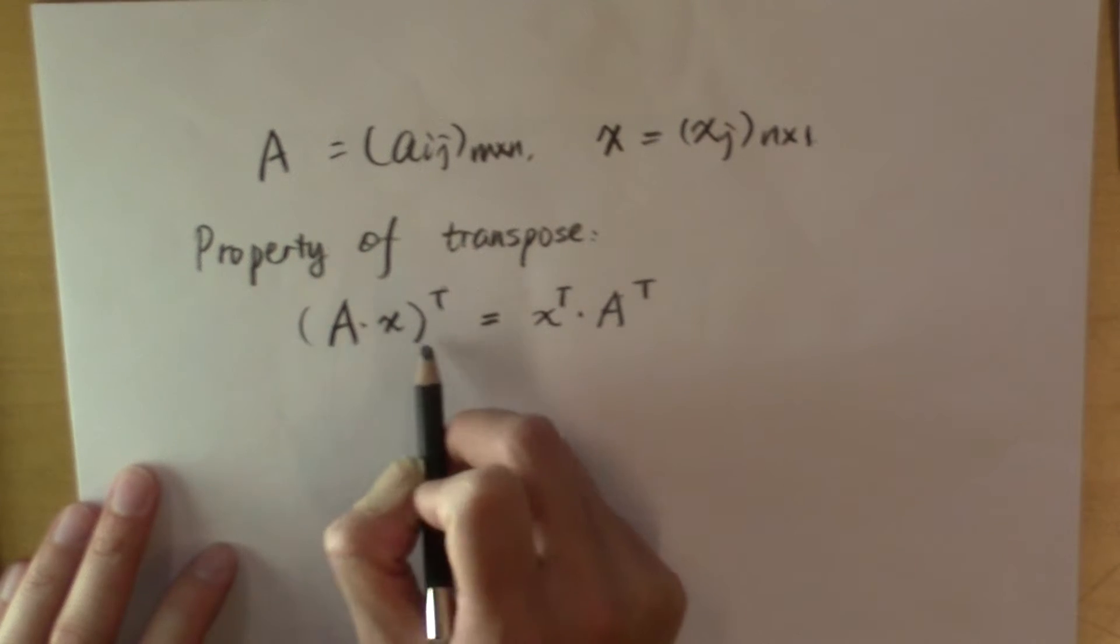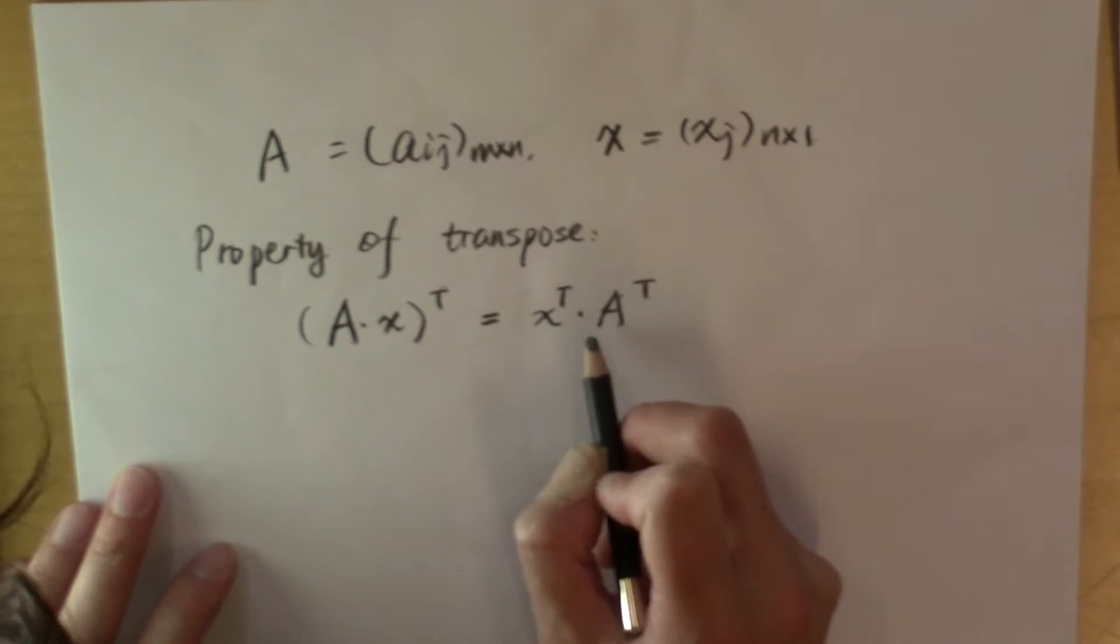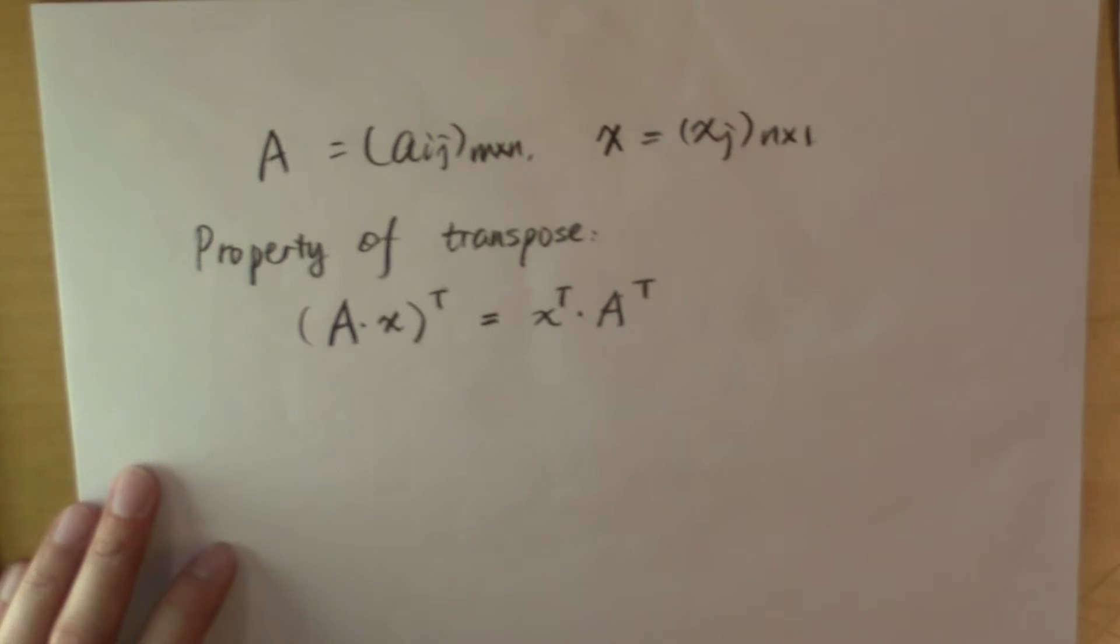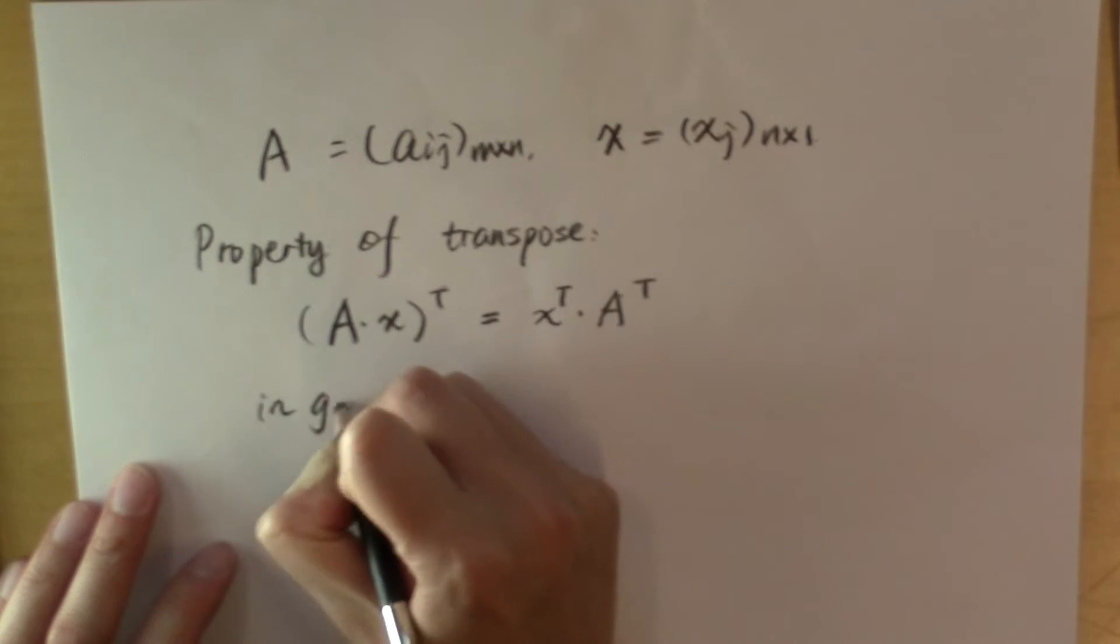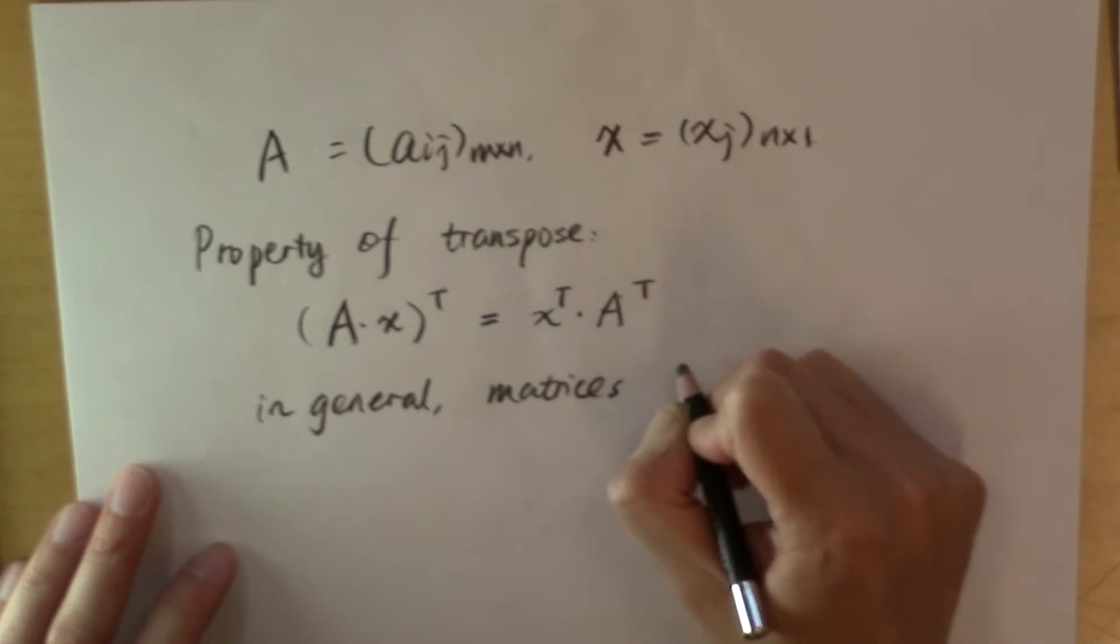You can verify that by computing the left hand side, and then computing the right hand side, and see that they are going to equal each other. And then you can go ahead and verify that in general, for matrices A and B,